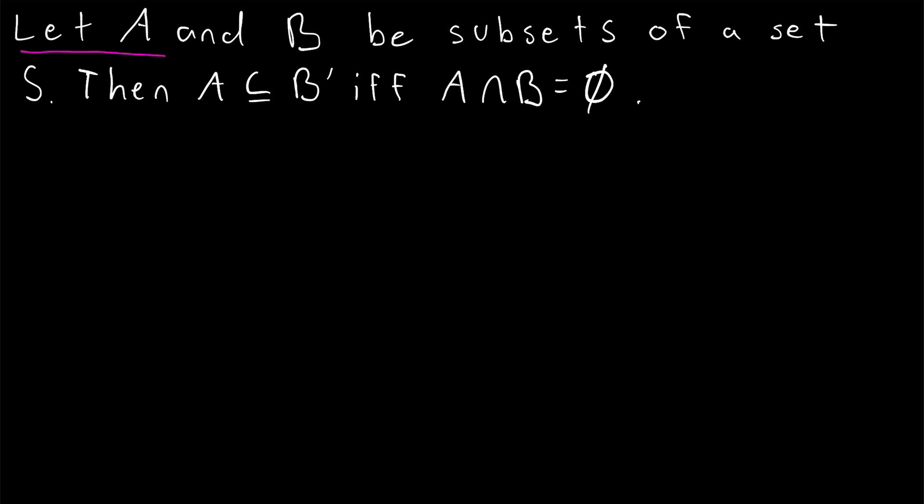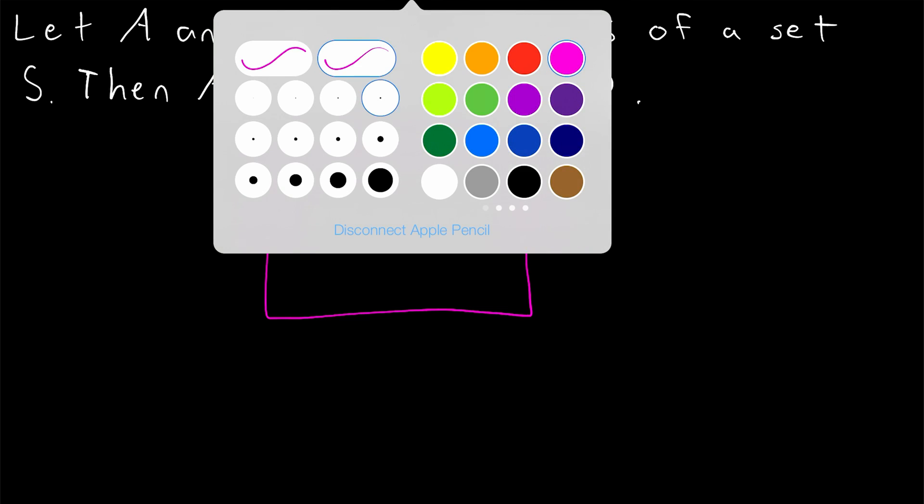And I want to point out we're saying A and B are subsets of this set S so that the complement of B has meaning. By the complement of B, we mean all of the elements not in B that are in S. So if this is our set S, which we might call the universal set in this case,